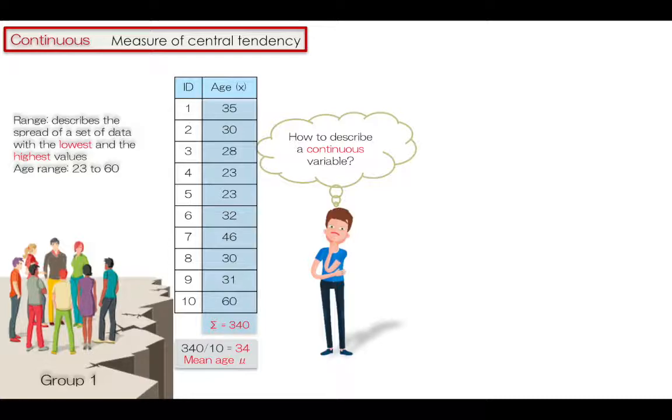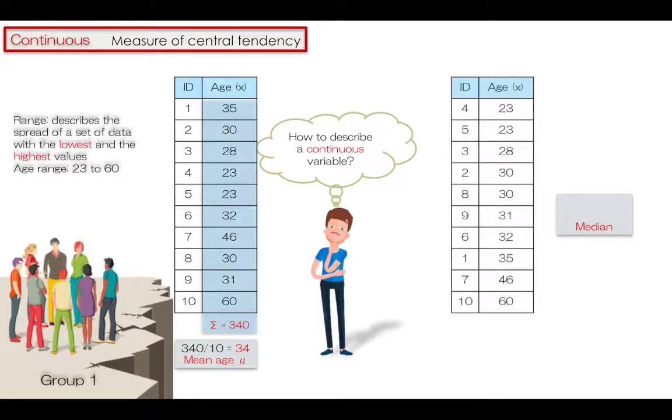The other frequency used for measuring central tendency is the median, the value that comes halfway when the data are ranked in order, like here as you see from 23 to 60.